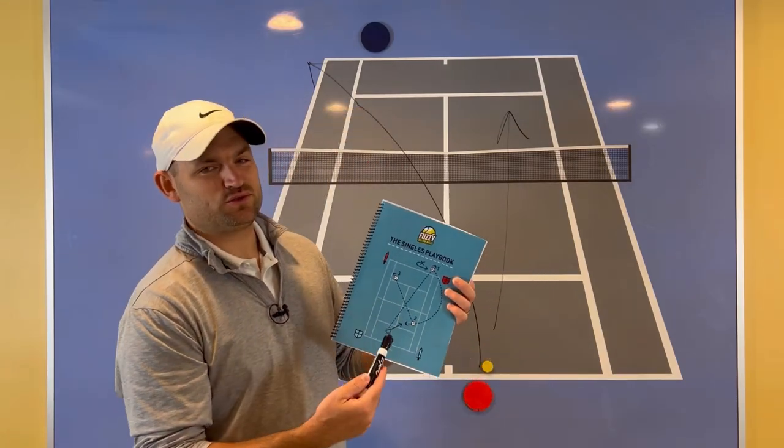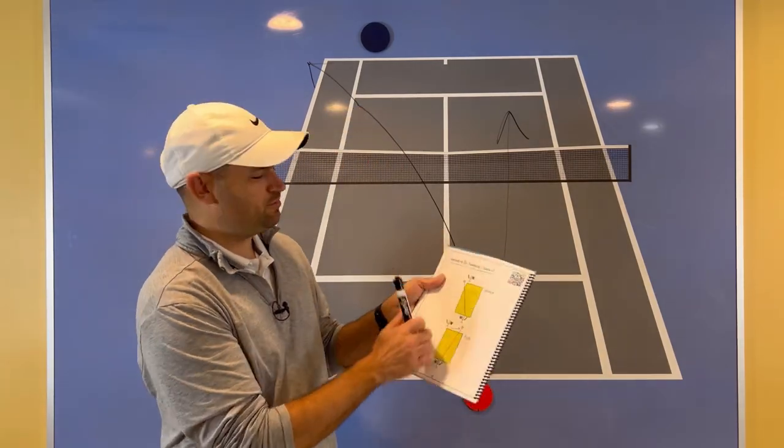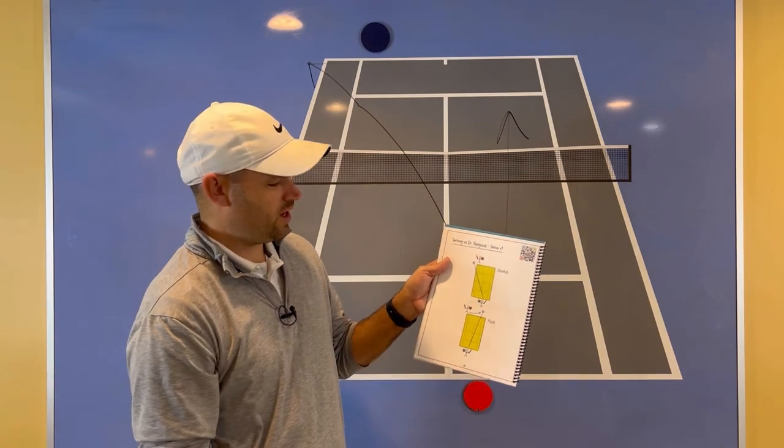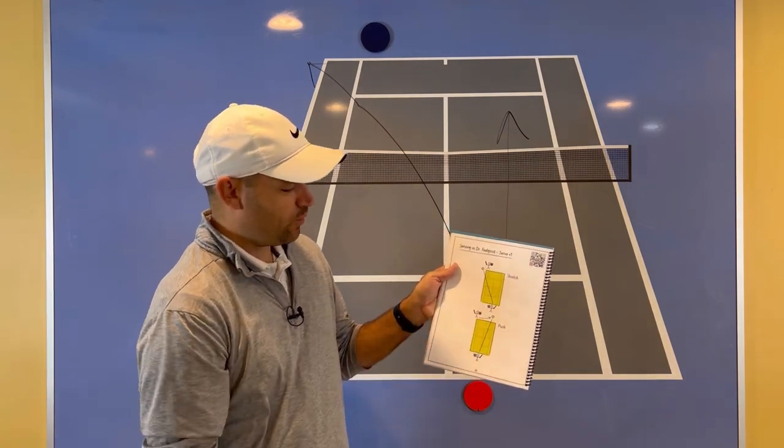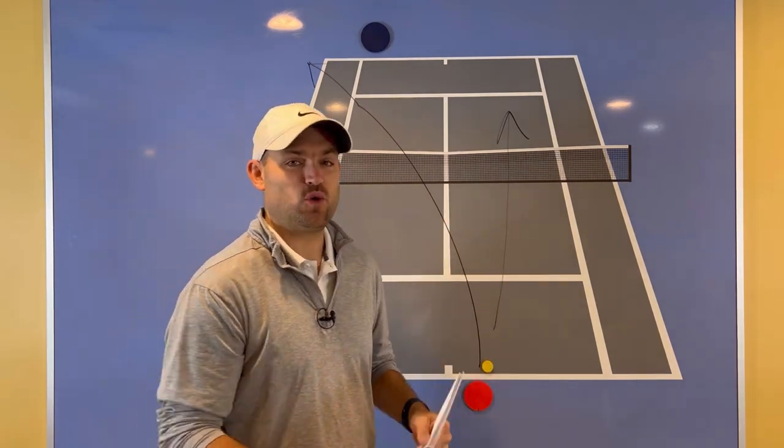On page 39 of the Singles Playbook by Fuzzy Yellow Balls is a play called Serve Plus One. This is where you pull your opponent out wide and it gives you the open court. It looks like this.